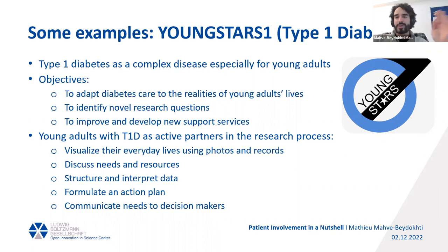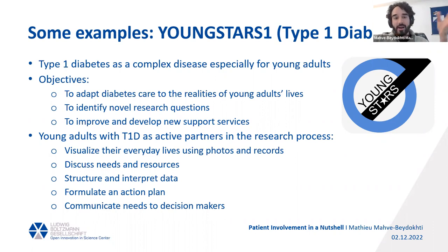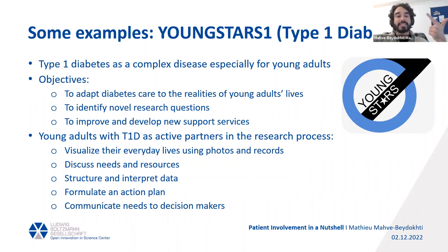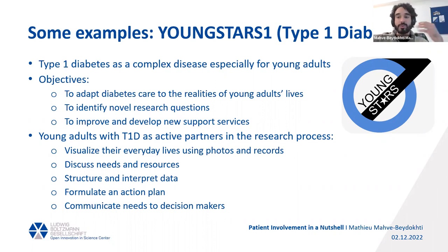The second example is the Young Stars project, focused on type 1 diabetes — a very complex disease, especially for young adults. They involved teenagers with type 1 diabetes as co-researchers. The objectives were to adapt diabetes care to the realities of young adults, identify novel research questions, and improve and develop new support services. The teenagers collected data and participated in data analysis, gaining significant research skills. With the findings, they and the researchers formulated an action plan on where care can be improved, and the current stage is communicating this action plan to decision makers.